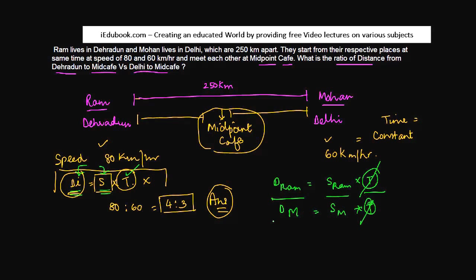Again, the ratio has to be equal to the ratio of their speeds. And that's how you get 80 is to 60 as the answer.